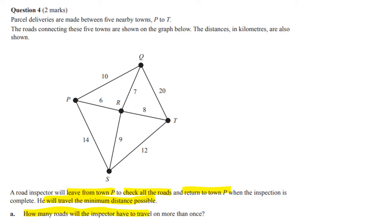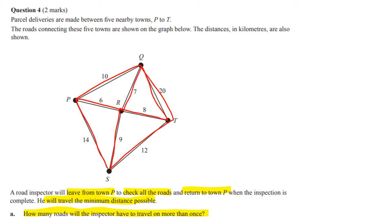How many roads will the inspector have to travel on more than once? You could do this by trial and error — go up here, go down, go around, go back up again, go across, go up, down, across, down — and then have to go back up again because we have to get back to P.